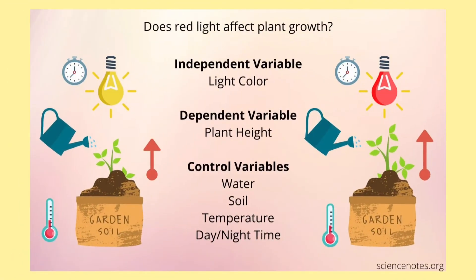Here is a problem: Does red light affect plant growth? The independent variable here is the light color — one plant is exposed to natural light while the other is exposed to red light. The dependent variable, or the condition that might be affected as a result of the change in light color, is the plant height — will the plant under red light grow taller or not? Water, soil, temperature, and day and night time are the controlled variables, the factors kept constant to determine any changes in the result. As you can see in the image, the plant with red light grows taller compared to the other plant.